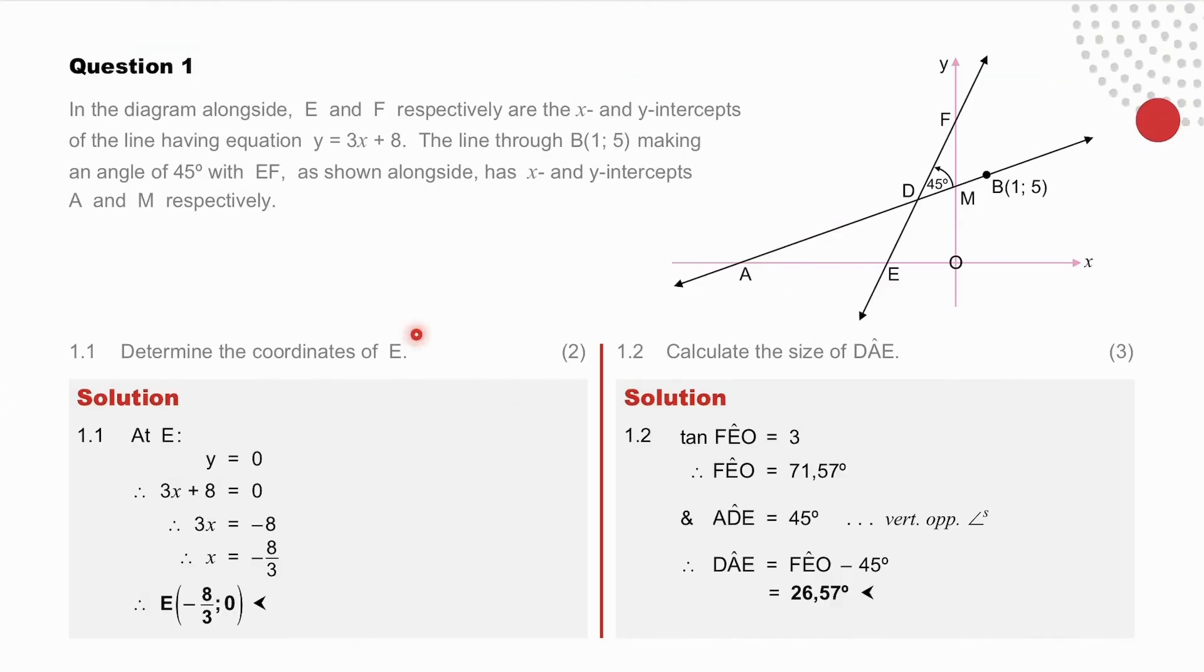The coordinates of E. As an x-intercept, the y is 0. And as a point on the line EF, y also equals 3x plus 8. We equate and arrive at that answer.